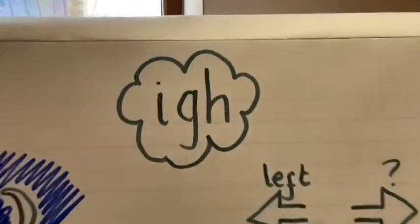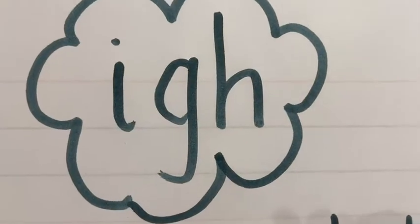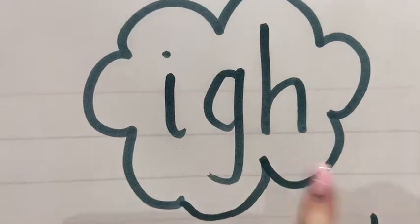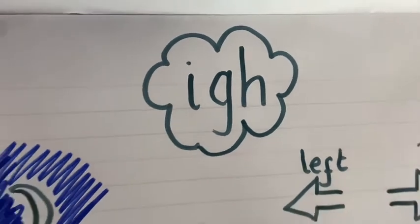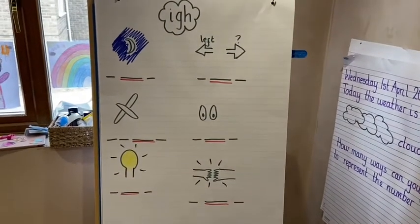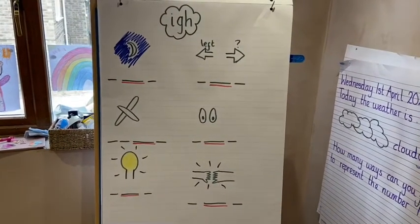Remember, all of the sounds have to sit together to make the trigraph 'igh'. Have a go at these pictures, and extra dojo points for anybody that can take one of these pictures and write a sentence.